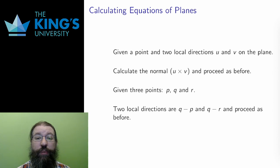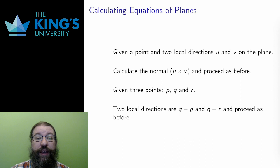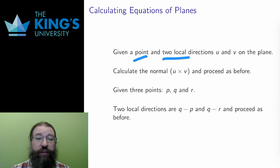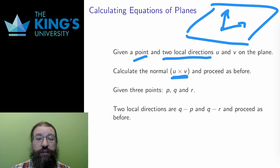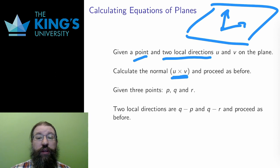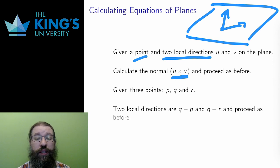Now let me talk about the other ways to describe planes. Unlike the previous process, these two are going to be unique to R3, so I'm going to use the cross product, which only lives in R3. In R3, I can determine a plane by being given a point and two local directions. You can think about this as a point and two ways you can move, and by moving those two ways, you can cover an entire plane. How do I then determine the equation of the plane? I do this by taking the cross product of the two local directions. Since a cross product produces a unique perpendicular direction, u cross v must be the local direction normal. Then I have a point and a normal, and I use the process from the previous slide.